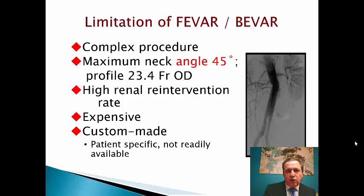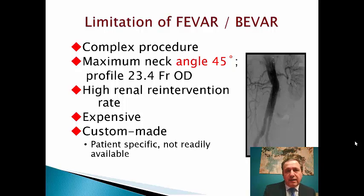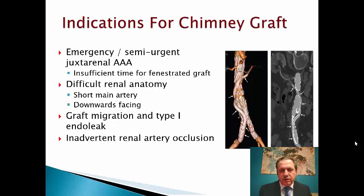The problem with FEVAR and PVAR is they have their own limitations. It's a complex procedure, the maximum neck angulation should be less than 45 degrees, it's a large profile, has a high renal re-intervention rate, it's expensive, and custom-made devices take at least two to three months in Saudi Arabia. The indication for chimney graft is if you have an emergency or semi-urgent case, if you have a difficult renal anatomy with a short main renal artery or downward-facing renal artery, or if you have graft migration with type 1 endoleak and need an emergency solution.